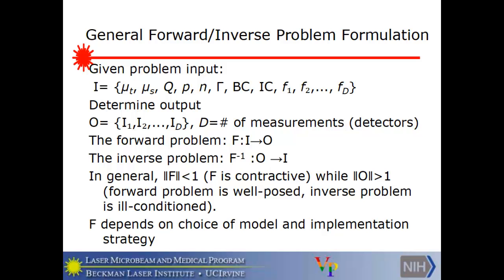It squishes the space of I into a smaller space of O. You can think of it that way. But the opposite map is greater than one. That should not be norm of O. That should be F inverse. So norm of F inverse is greater than one. This means the forward problem is well posed, and the inverse problem is ill-conditioned. Because things get magnified when you go the other way.